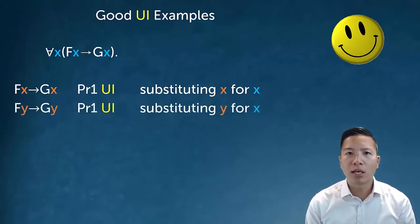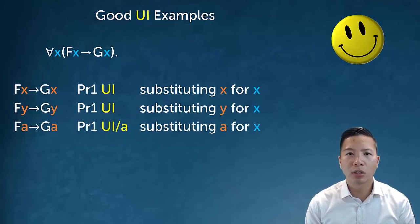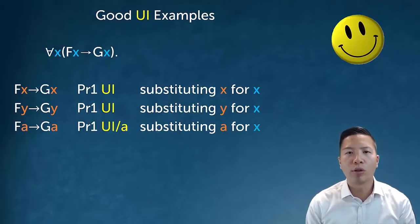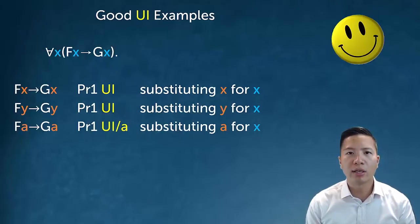Another good UI would be to substitute y for x, or substitute a name letter a — it doesn't matter so long as it's a singular term. Note the notation 'UI/a' is just a code meaning I substituted a for the variable associated with the quantifier. Importantly, all instantiation rules drop the quantifier of the main operator and instantiate every instance of the bound letter — so I had to replace all instances of x with a.